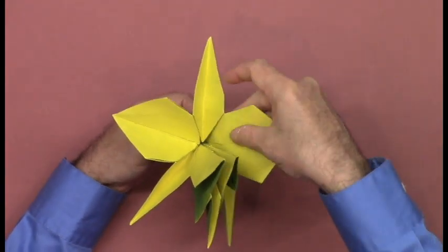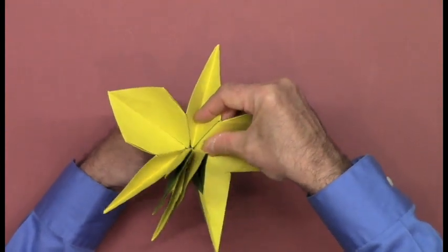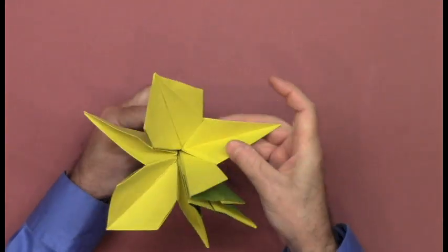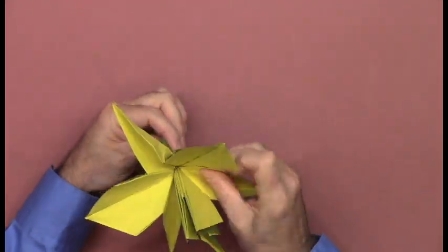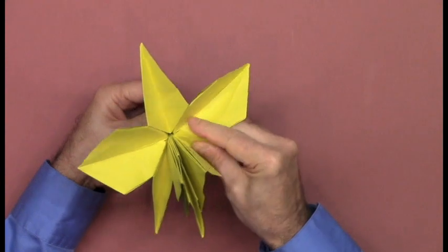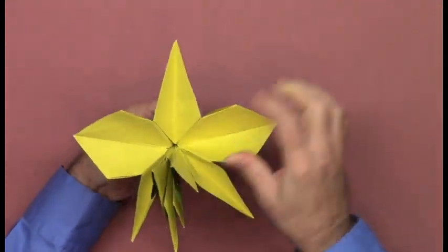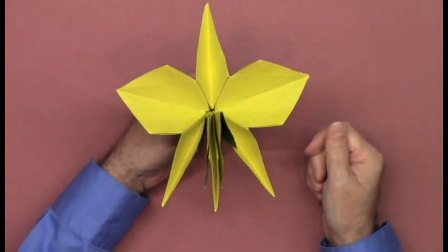We're going to do the same thing on the other side. Mountain fold sharply along the guiding folded edges here and there. So there's an upper and a lower folded edge for each of the two flanking petals.